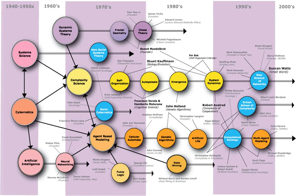In the post-war era, Vannevar Bush's differential analyzer, John von Neumann's cellular automata, Norbert Wiener's cybernetics, and Claude Shannon's information theory became influential paradigms for modeling and understanding complexity in technical systems. In response, scientists in disciplines such as physics, biology, electronics, and economics began to articulate a general theory of systems in which all natural and physical phenomena are manifestations of interrelated elements in a system that has common patterns and properties.